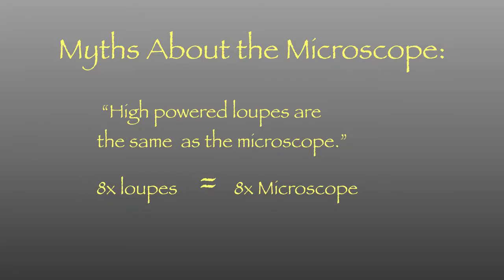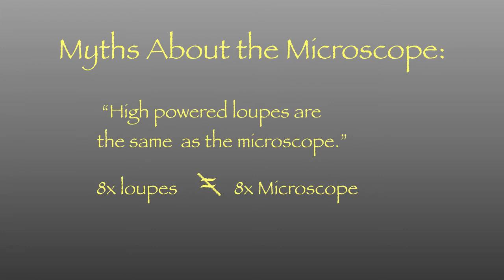One of the myths about the microscope is that high-powered loops are the same as the microscope. For years I falsely assumed this, because there was no information about microscopes at that time. I believed the myth that magnification levels were based on that power number. When I first started with microscopes in my ops, I would check hygiene with my 4.5 power loops, and patients would come back for their restorative appointments. I would find things with the scopes that I couldn't see with my loops. If you think you have enough magnification, remember: the human hand can do much more detail than the human eye can see.